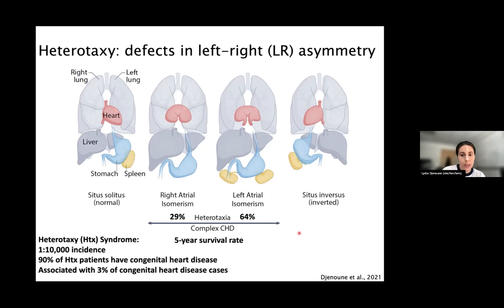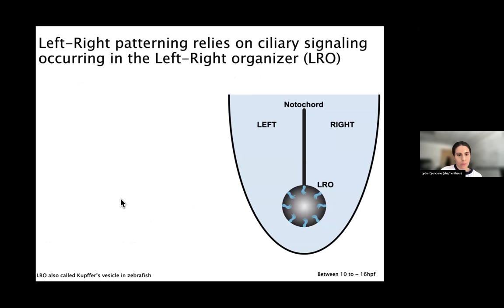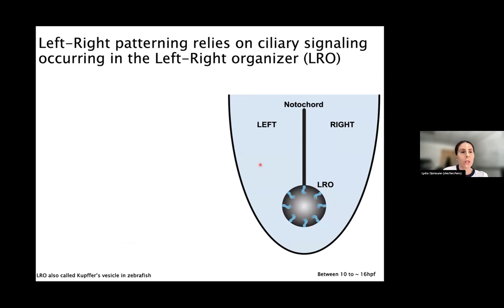Now that we know that proper lateralization is important, where does it all start and how does it take place? It all starts in a ciliated and transient structure called the left-right organizer. This left-right organizer is a structure conserved across vertebrates — you've probably heard of it under different names, as it's called the embryonic node in the mouse.